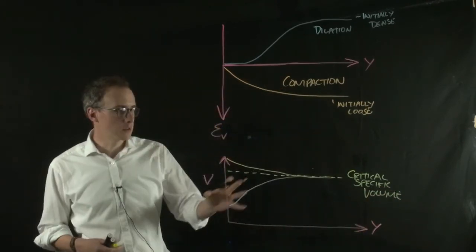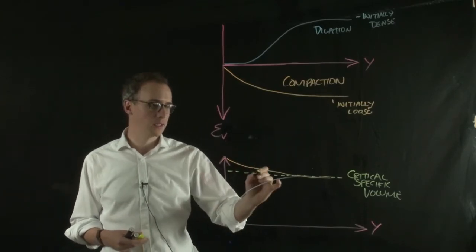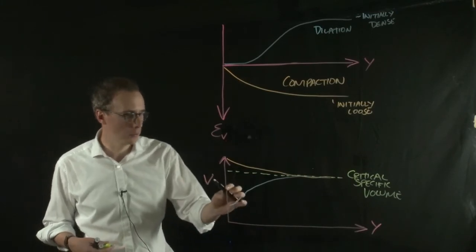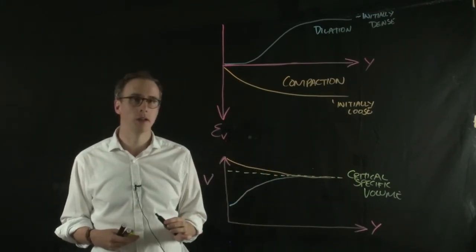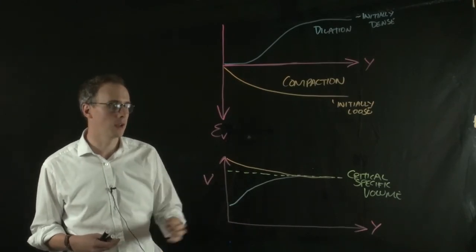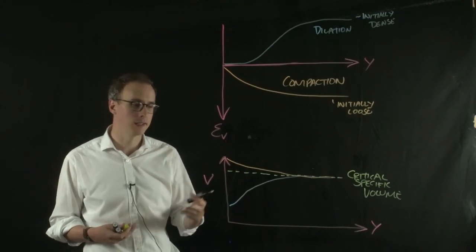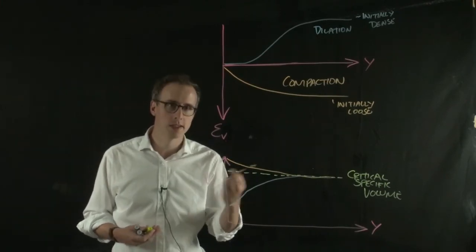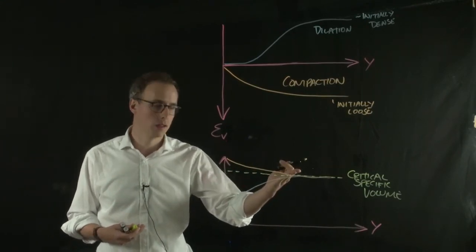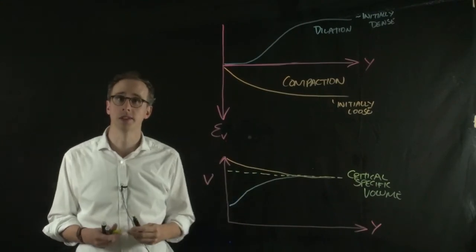Now we'll come back to critical state when we talk about that in later videos, but it's quite interesting to note now that whether it's initially dense or initially loose, it will change in specific volume until it reaches the critical specific volume, which is something quite interesting to think that the voids within the material will reach a situation, whether it's initially dense or initially loose, that's pretty much the same.